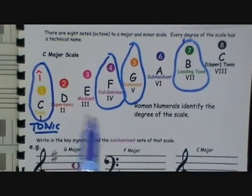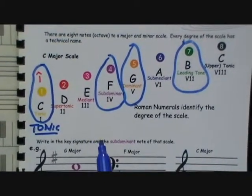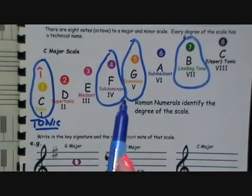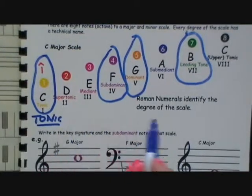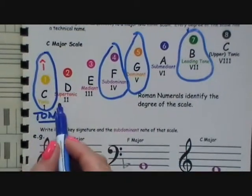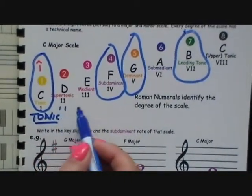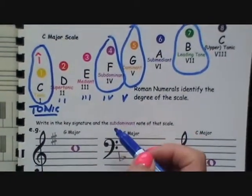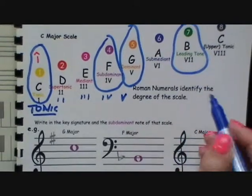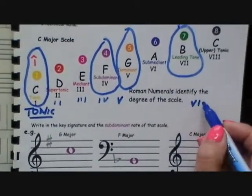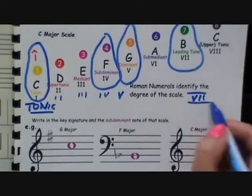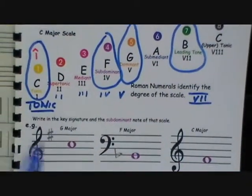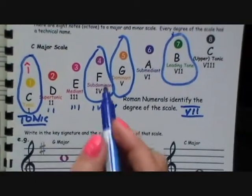There are two ways to write the tonic. They'll give you the technical degree name — so the tonic, the supertonic, the mediant — or it could be identified with Roman numerals, such as I, II, III, IV. The Roman numeral for 5 is just V, and 7 would be VII. But they also use just the numbers with a caret sign on top.